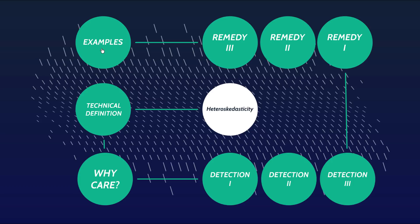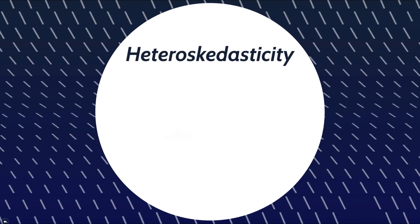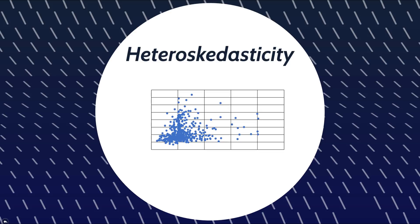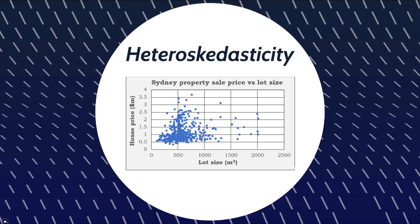And finally I'll provide a few real-world examples of where heteroscedasticity would exist. So let's tuck in. The example we're going to use in this video is Sydney property sale prices — the house sale price on the left in millions of Australian dollars, and the lot size on the bottom. We're going to keep it simple and just look at house price as a function of lot size.